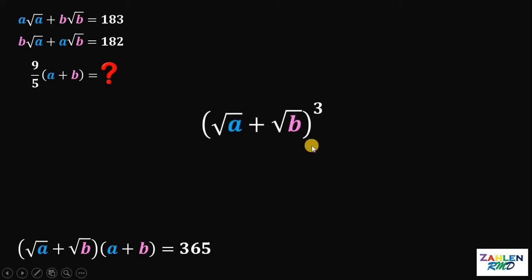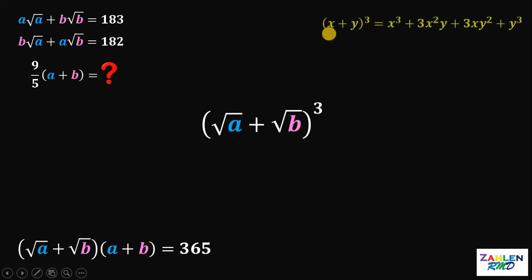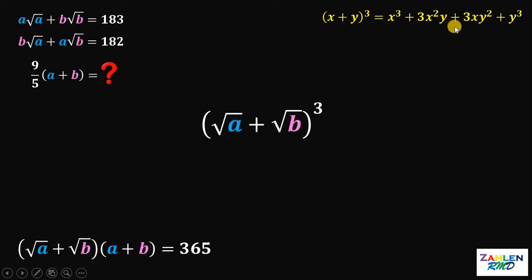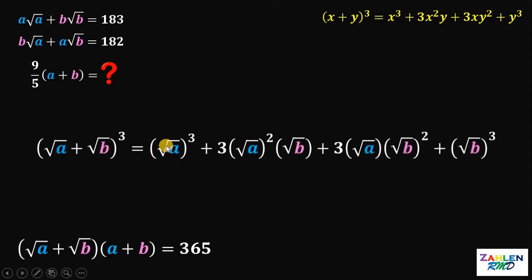Why raise to the 3rd power rather than 2 or 4? Because if we raise (square root of A plus square root of B) to the third power, we apply the identity: (x + y)³ = x³ + 3x²y + 3xy² + y³. Using this identity, (square root of A plus square root of B)³ expands to: square root of A cubed, plus 3 times square root of A squared times square root of B, plus 3 times square root of A times square root of B squared, plus square root of B cubed.